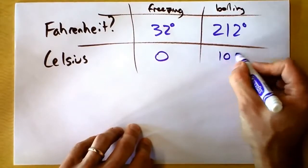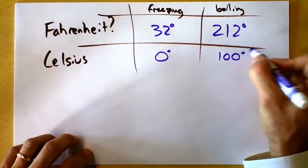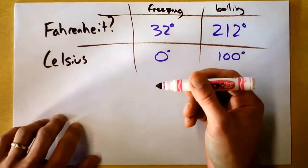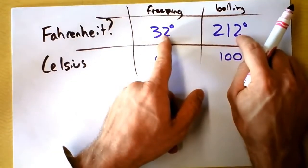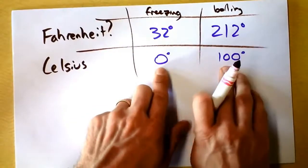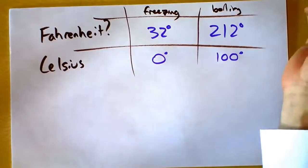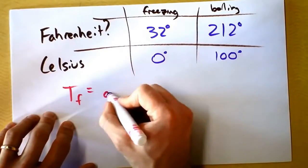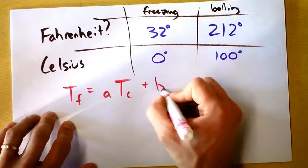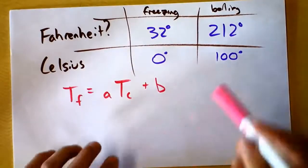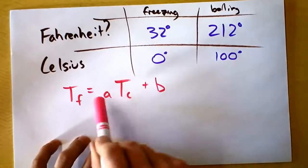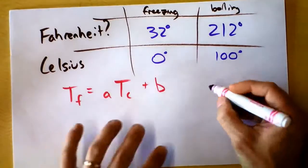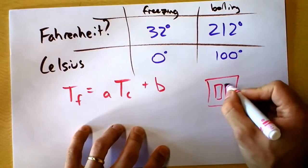Some easy numbers to remember are zero and a hundred. There's a linear relationship because I'm taking 180 degrees on the Fahrenheit side and stretching it down to just 100 degrees on the Celsius side, with an offset because the freezing points aren't the same. So let's make an equation: the temperature in Fahrenheit equals some number times the temperature in Celsius plus some offset. Use this equation and the four facts we have to derive the conversion, and I suggest you do it right now.